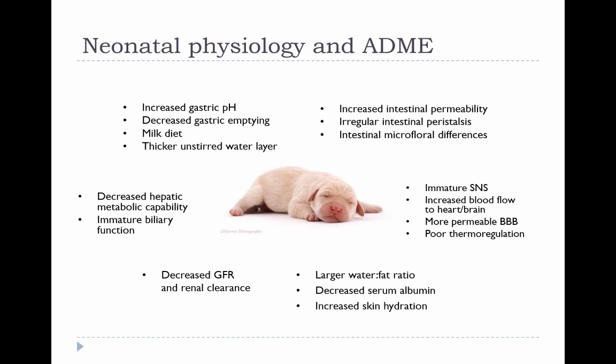This slide illustrates the spectrum of physiological differences between a neonate and an adult in terms of things that might affect drug absorption, distribution, metabolism, and excretion. Factors at the top primarily impact absorption and bioavailability of orally administered drugs. The larger water-to-fat ratio affects drug distribution and plasma concentrations. The immature sympathetic nervous system — leading to reliance on heart rate for perfusion — impacts autonomic drug choices. Reduced hepatic metabolic capacity and reduced renal clearance affect excretion and half-life of certain drugs.